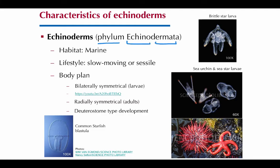Let's look at that word: echino means spiny, and derma means skin, like a dermatologist — so that's where this phylum gets its name. These organisms are all marine, meaning they live in salt water like the ocean, though some live in more brackish water occasionally. They're slow moving or sessile, meaning they don't move at all — attached to their substrate, at least as adults. If you've ever seen a sea star creep along, you know it takes a while for them to get anywhere.